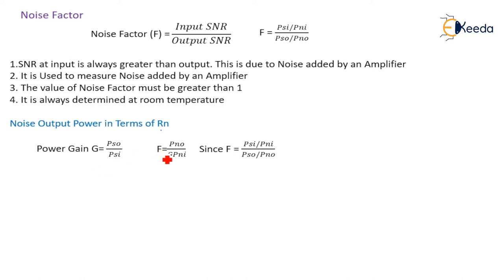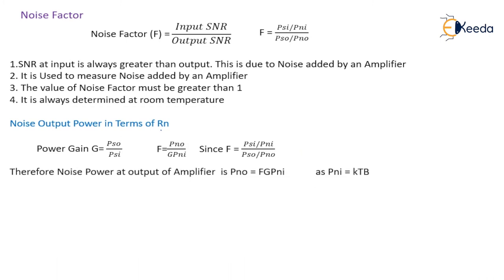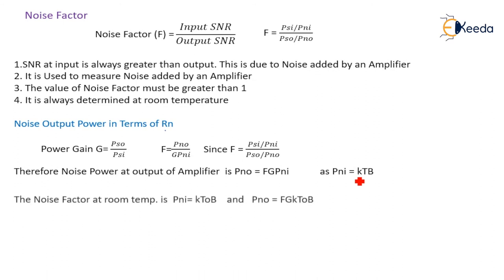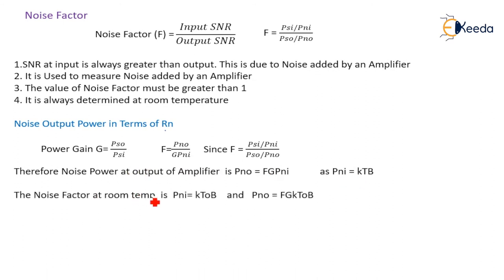In terms of F, we know PNO divided by G times PNI. From the definition F equals PSI over PNI divided by PSO over PNO, the noise power at the output of the amplifier is PNO equal to F times G times PNI. Since PNI equals KTB, at room temperature PNI equals KT0B, and hence PNO equals G times F times G times KT0B.